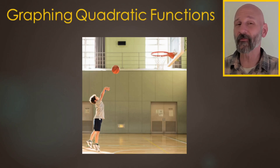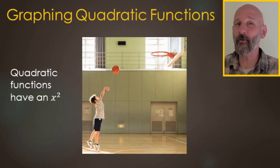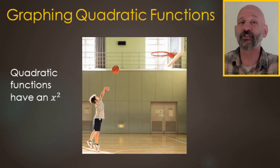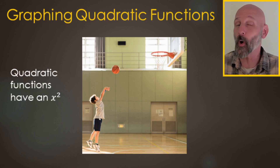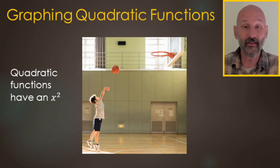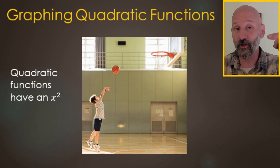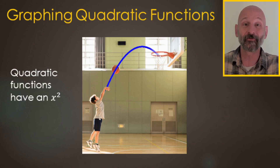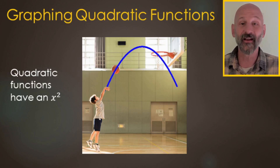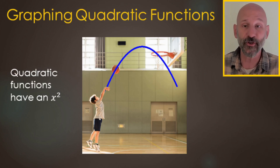In this video, we're going to be graphing quadratic functions. You can tell if it's a quadratic if it has an x-squared or a variable squared on it. The shape of quadratics makes a u, or in this case, looking at our basketball star, he's shooting a basketball and the flight of the ball makes an upside-down u.